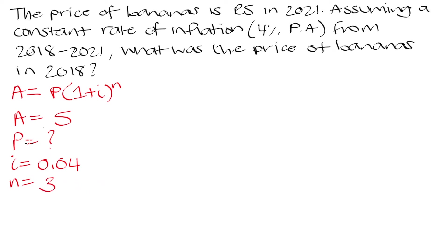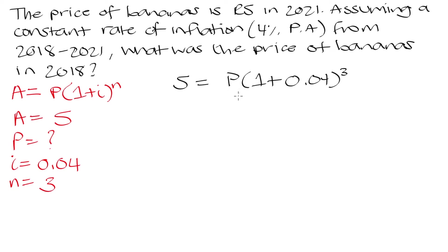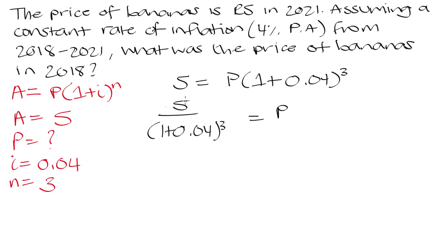Plugging what we know into the formula: 5 = P × (1 + 0.04)^3. To solve for P, we divide both sides by (1 + 0.04)^3, giving P = 5 ÷ (1.04)^3. Plugging this into our calculator, we get P = 4.44. So 4 rand and 44 cents was the price of bananas in 2018.